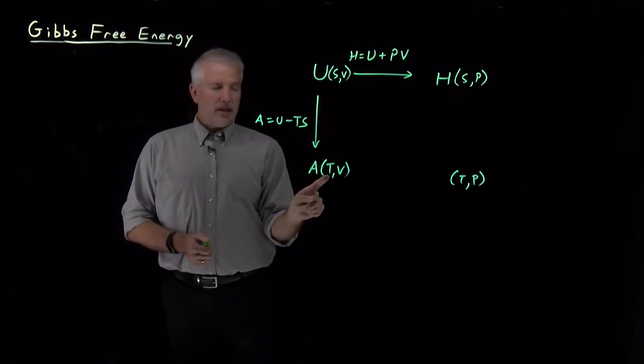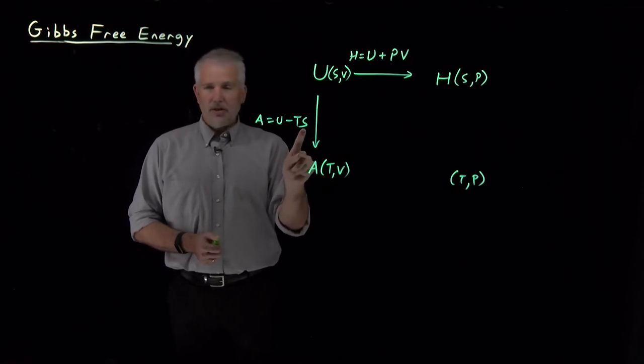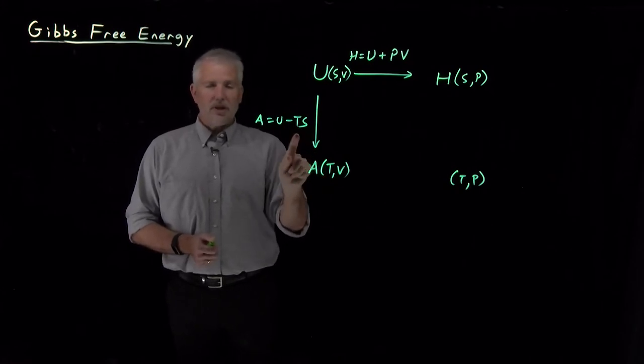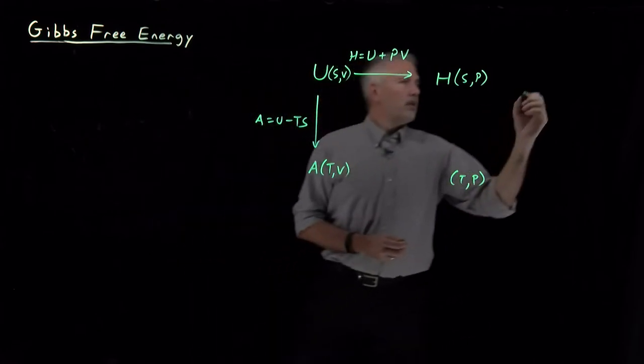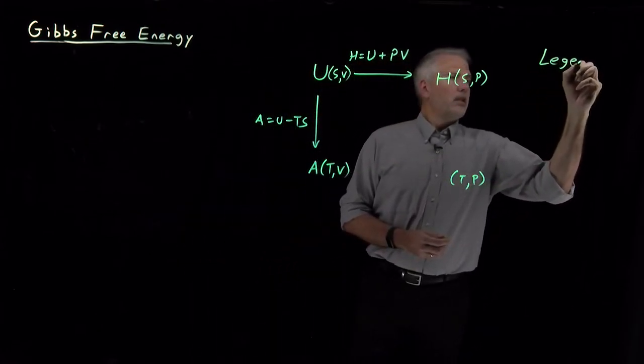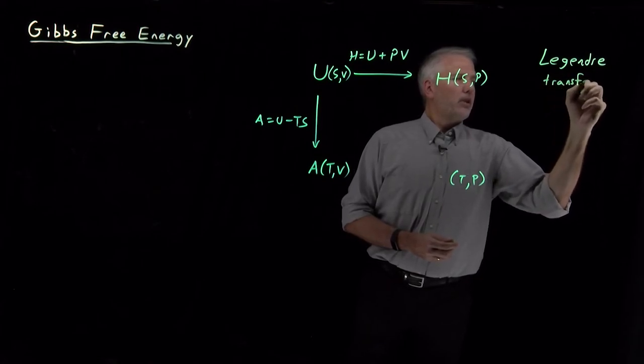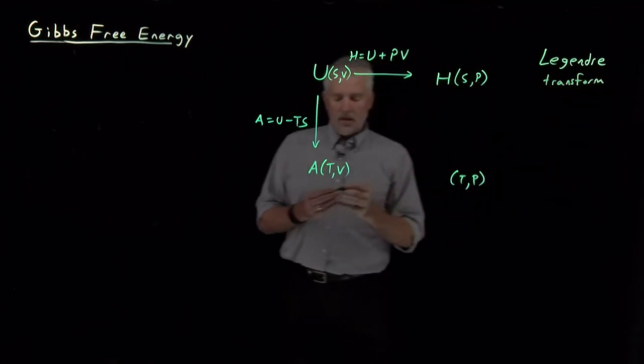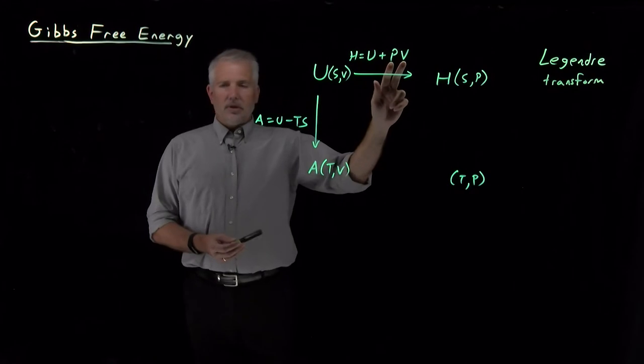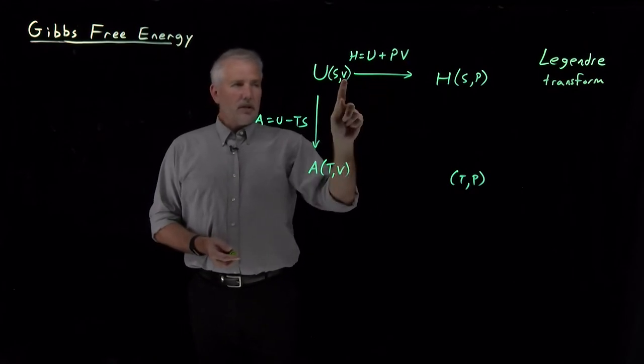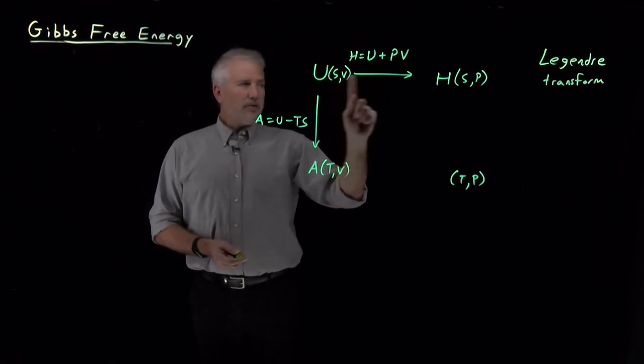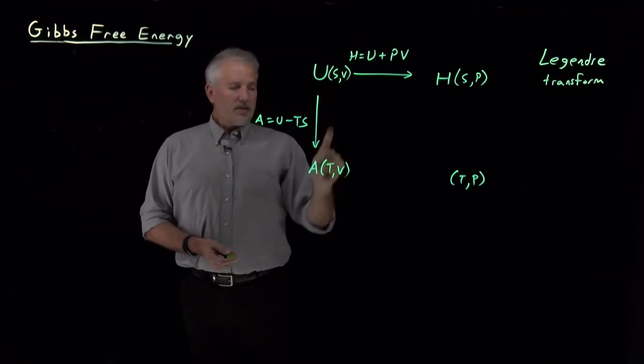So these transformations, those are called Legendre transformations. If I add or subtract an appropriate product of thermodynamic variables, I can switch the natural variable of V to P or S to T.